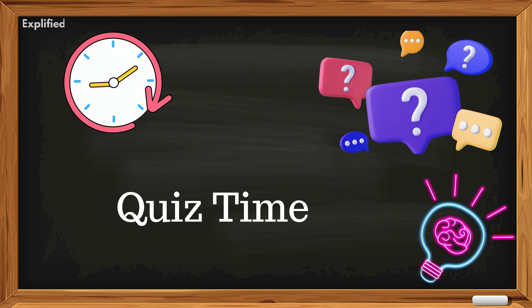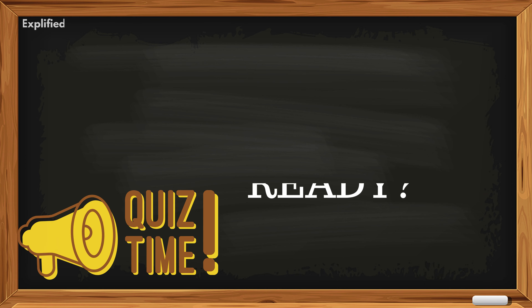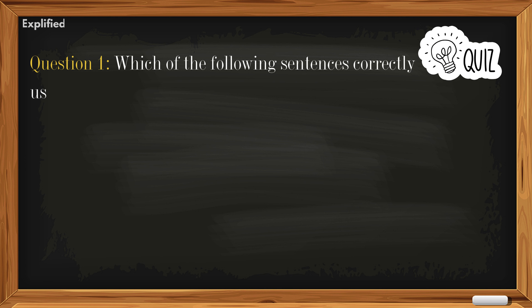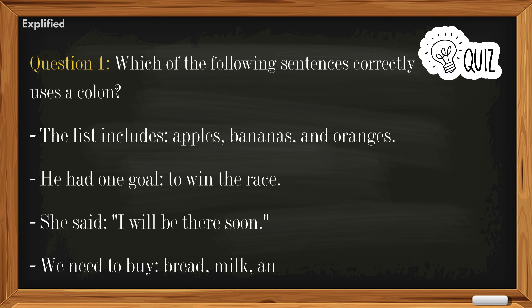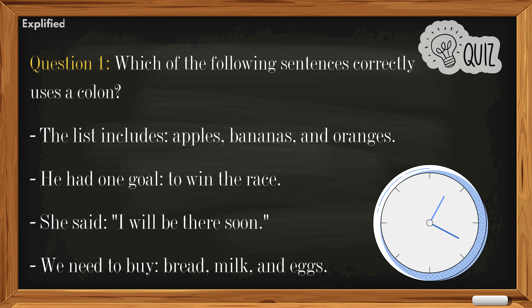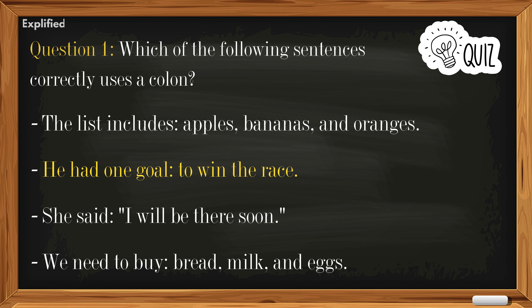It's quiz time! Now let's test your knowledge with some quizzes. Ready? Question one: Which of the following sentences correctly uses a colon? A) The list includes apples, bananas, and oranges. B) He had one goal: to win the race. C) She said, I will be there soon. D) We need to buy bread, milk, and eggs. Answer: B) He had one goal: to win the race.